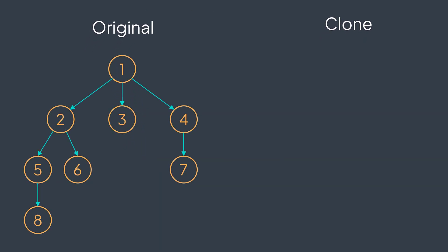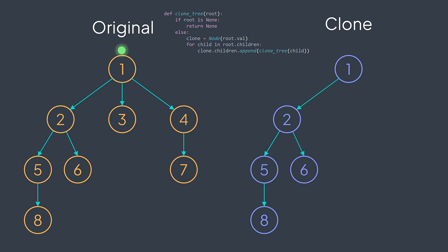To clone a tree, we can use depth first search. We'll create a node that has the same value as the root. Then for each children of the original node, for each one of them we'll clone it and we add the result to the children of the clone.